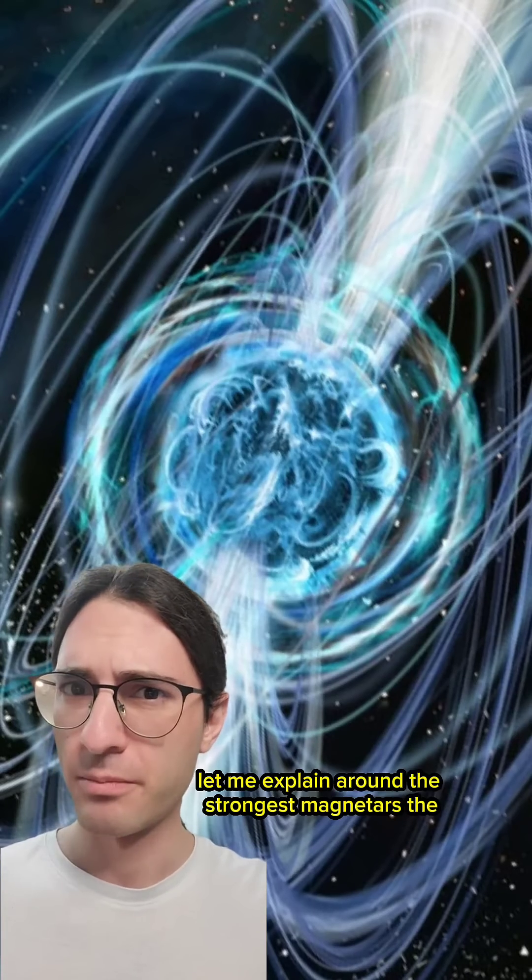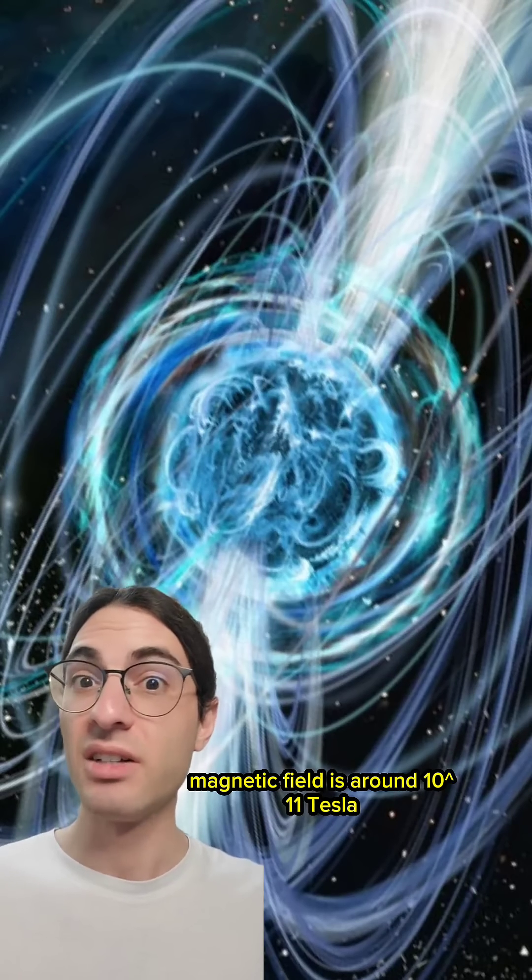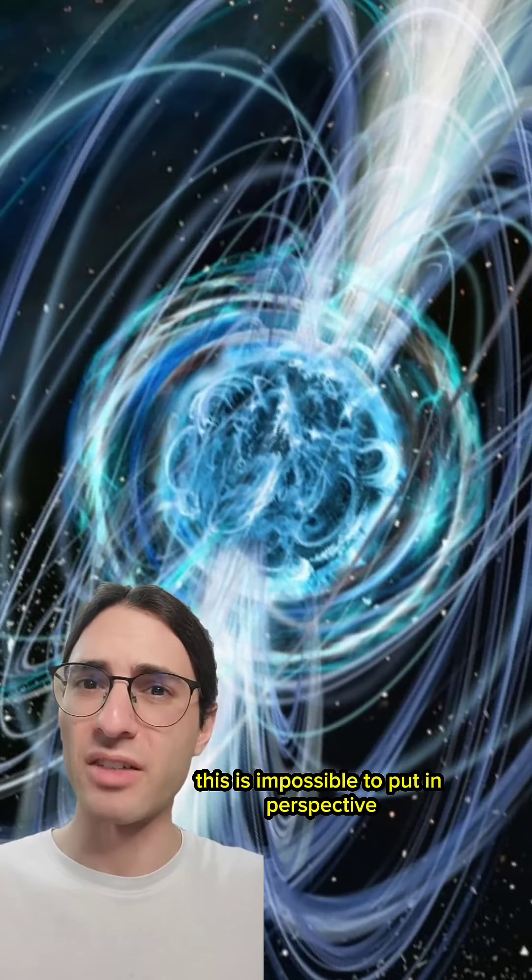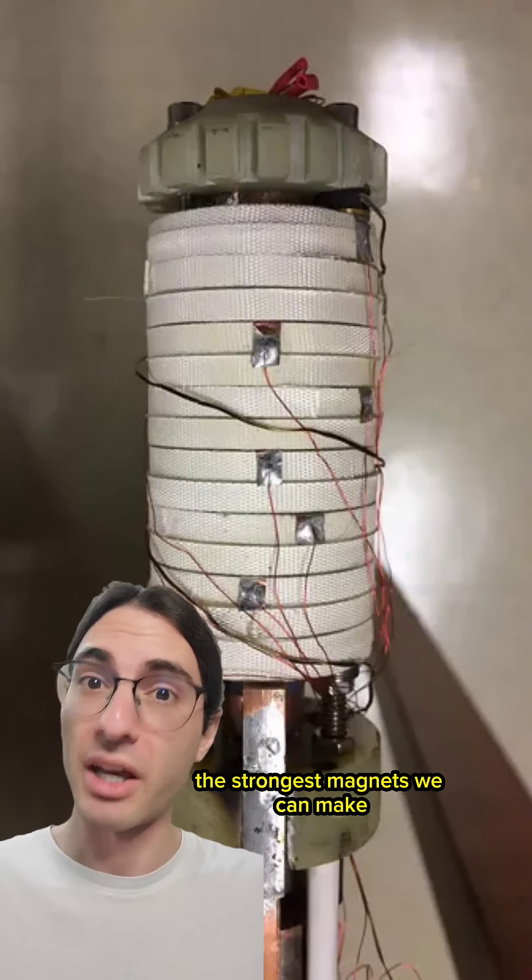Hold on, let me explain. Around the strongest magnetars, the magnetic field is around 10^11 tesla. This is impossible to put in perspective except by saying that the magnetic field is about a billion times stronger than the strongest magnets we can make.